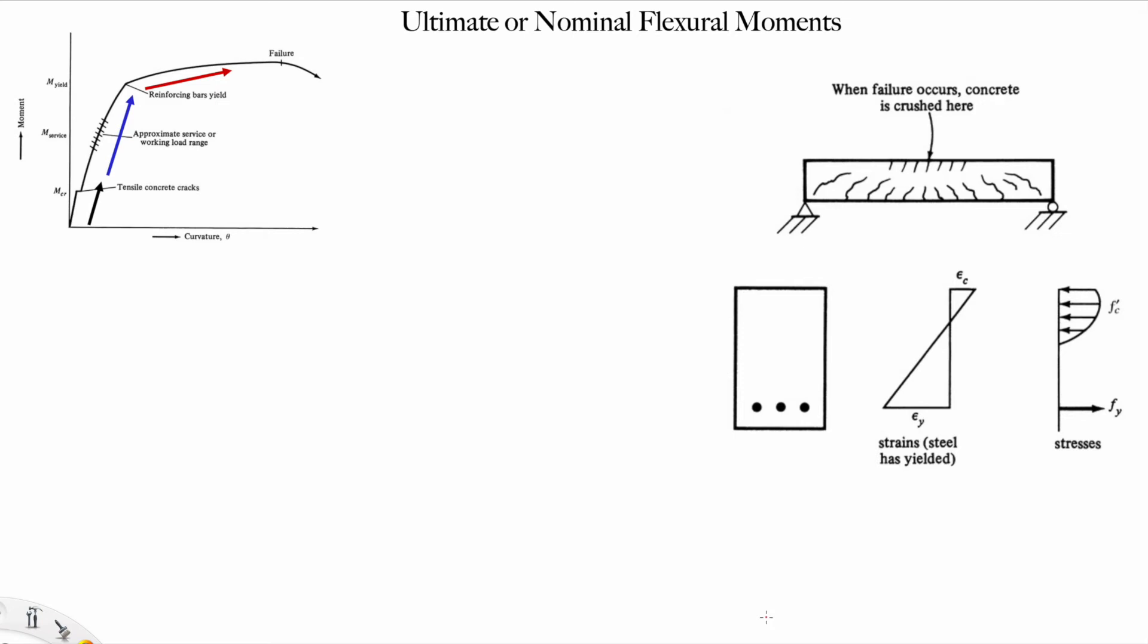I'm going to talk about ultimate or nominal flexural moments in beams. Last class we've seen this diagram a lot. The previous lecture we talked about M crack, and last class we talked about M service. Now we're talking about M yielding, where the steel reinforcement bars have been yielded.